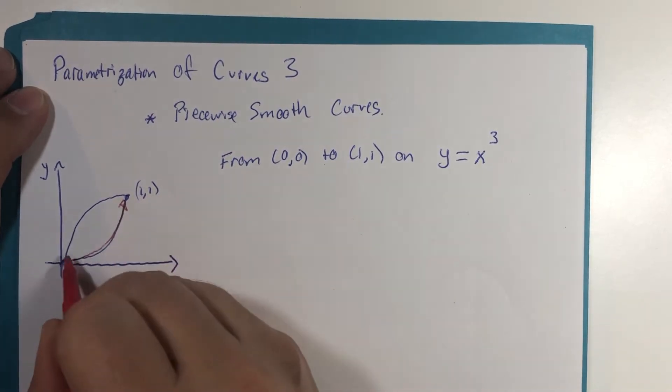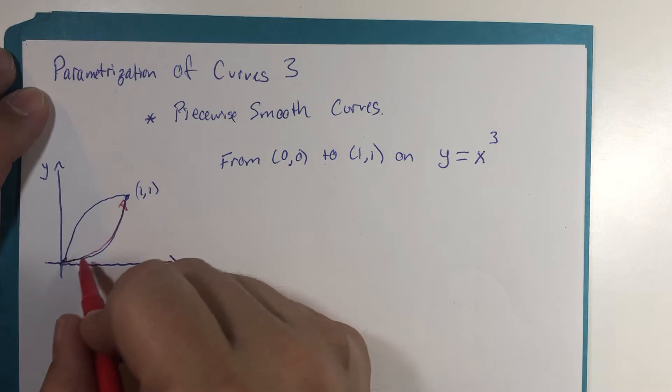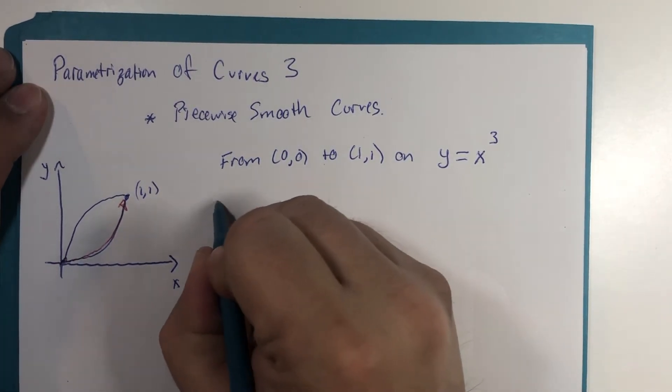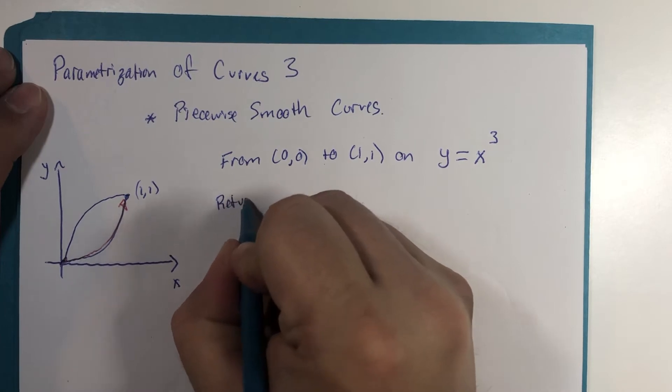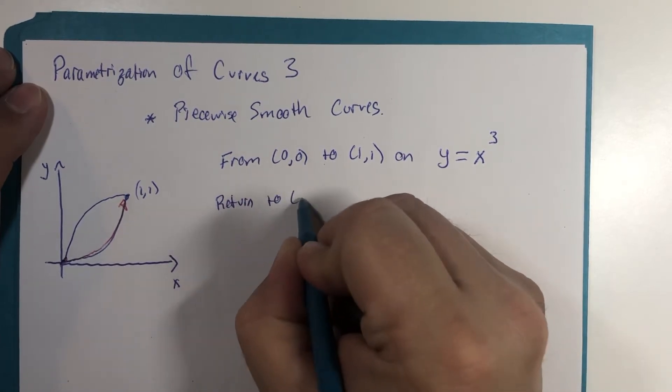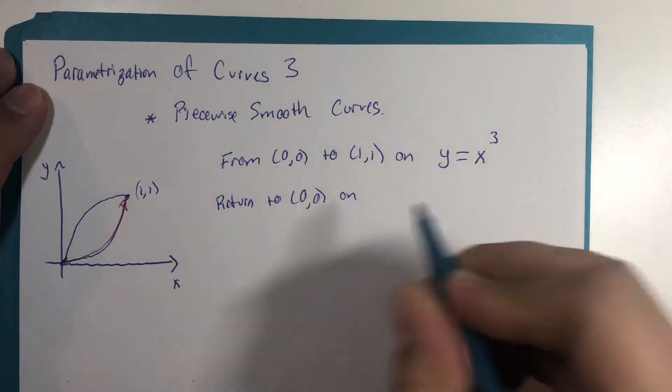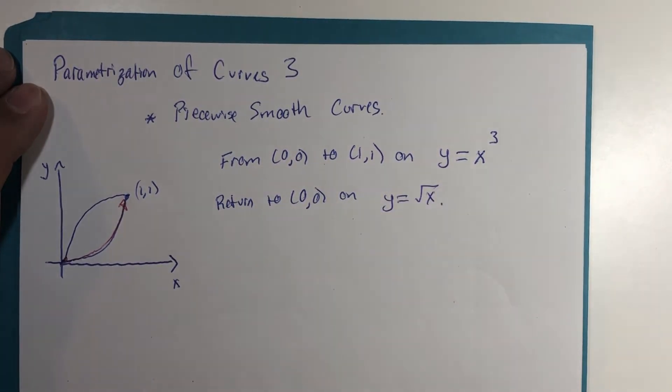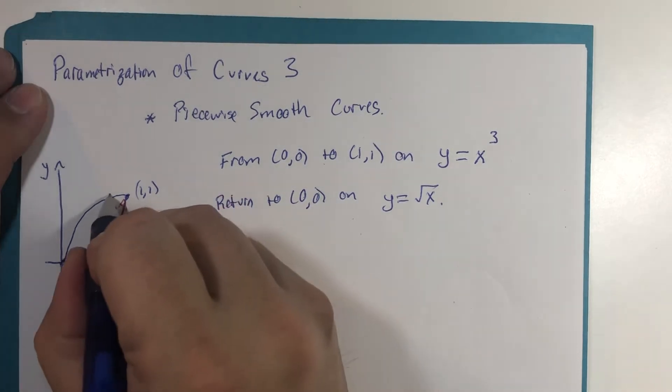On the graph of y=x³, it's concave up in this section, and then we're going to return to the point (0,0) on the graph of y=√x. So that would be the upper portion of the graph.